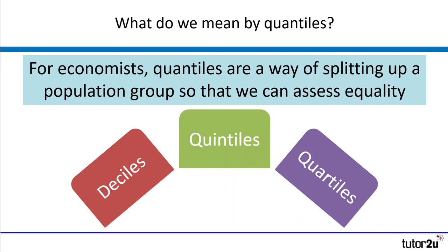We tend to meet three different types: deciles, quintiles and quartiles. For deciles we're splitting our population into tenths, quintiles the population is split into fifths, and quartiles we are splitting our population into quarters.